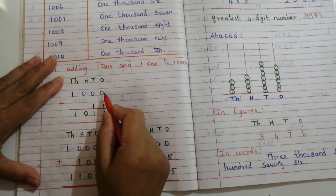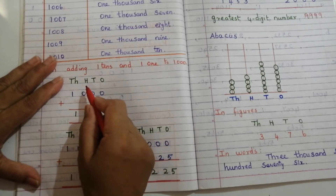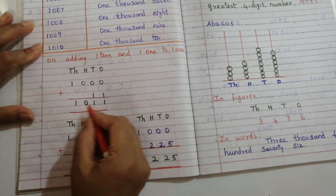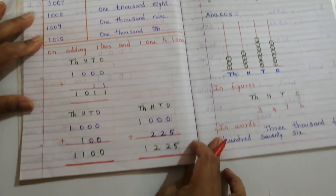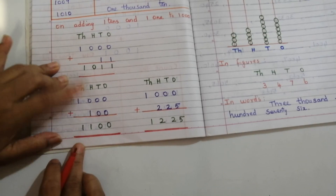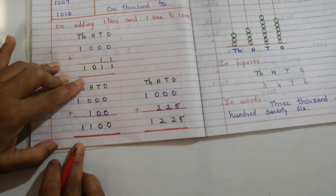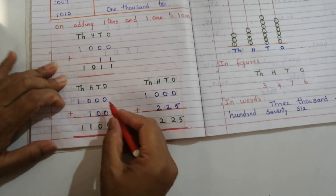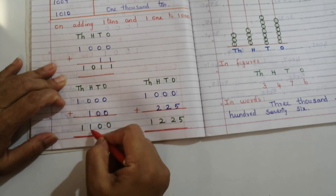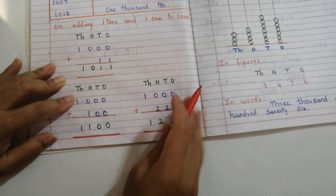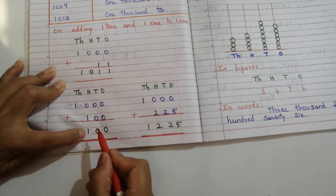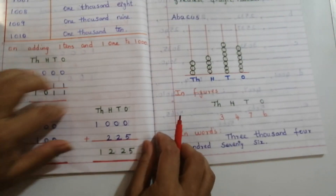Next, adding one ten and one one to 1000 gives 1011 — one thousand eleven. Adding one hundred to one thousand: we get 1100 — one thousand one hundred.